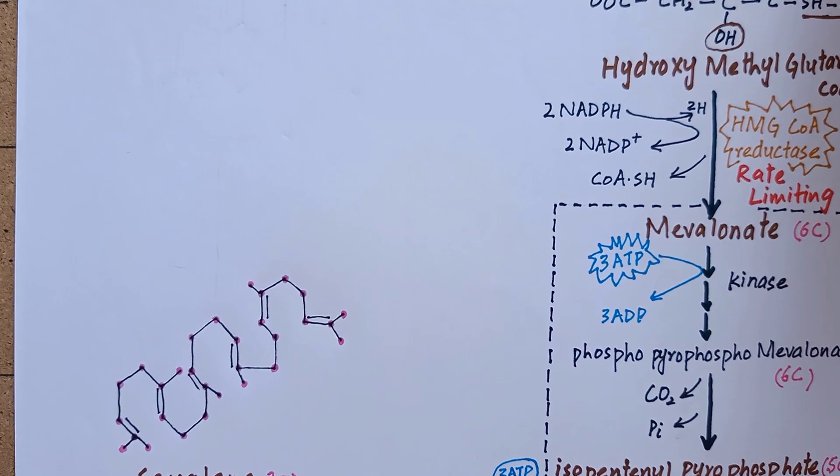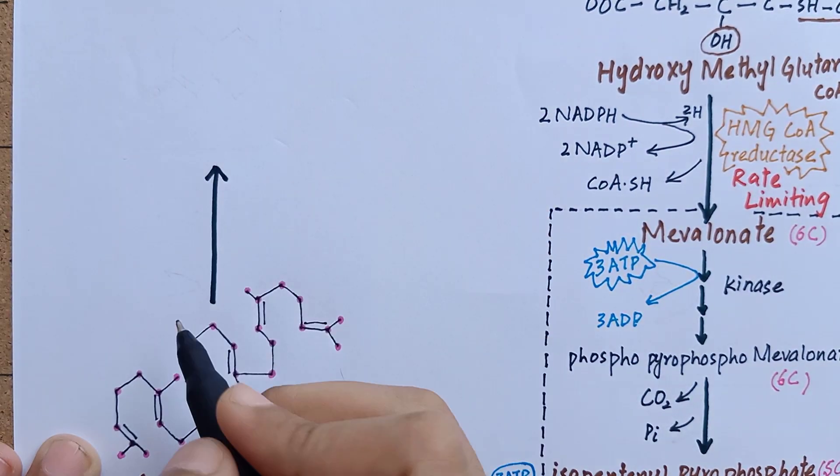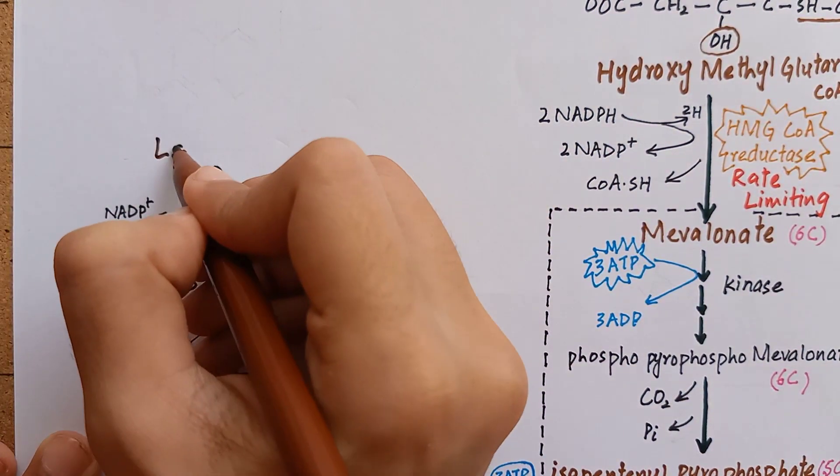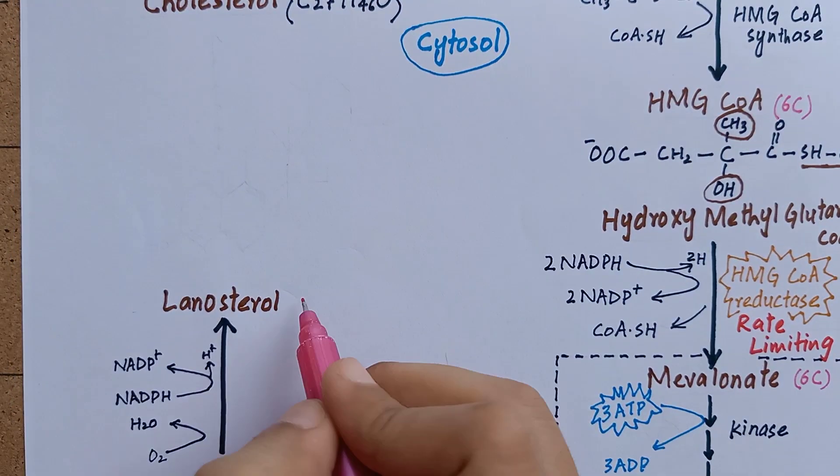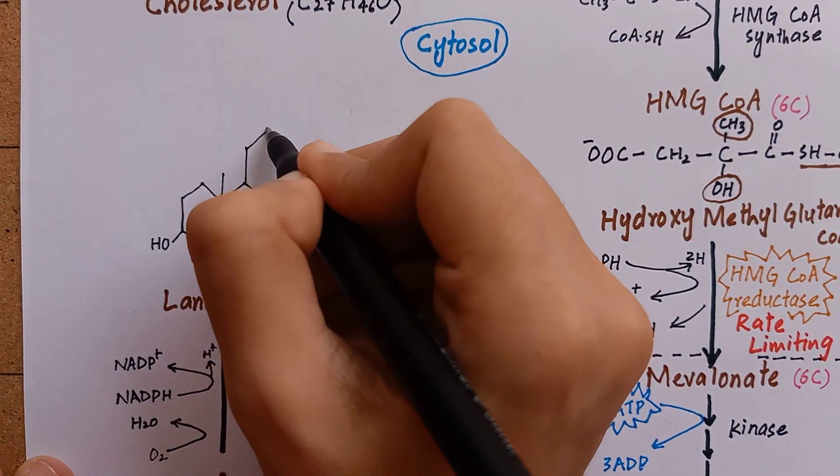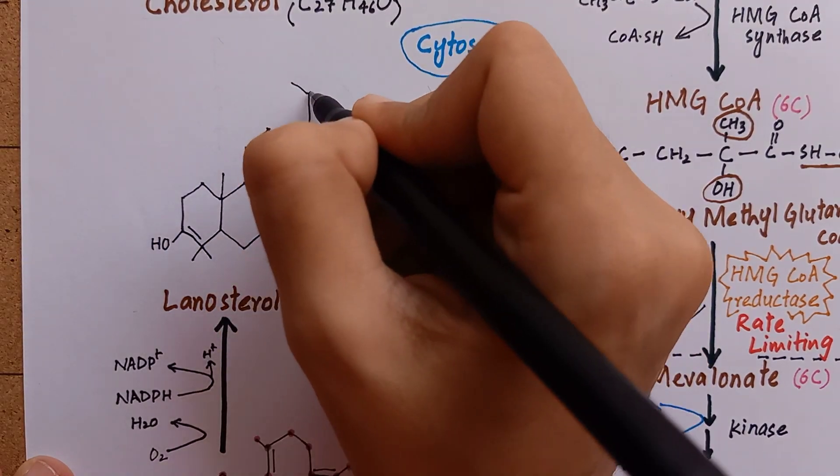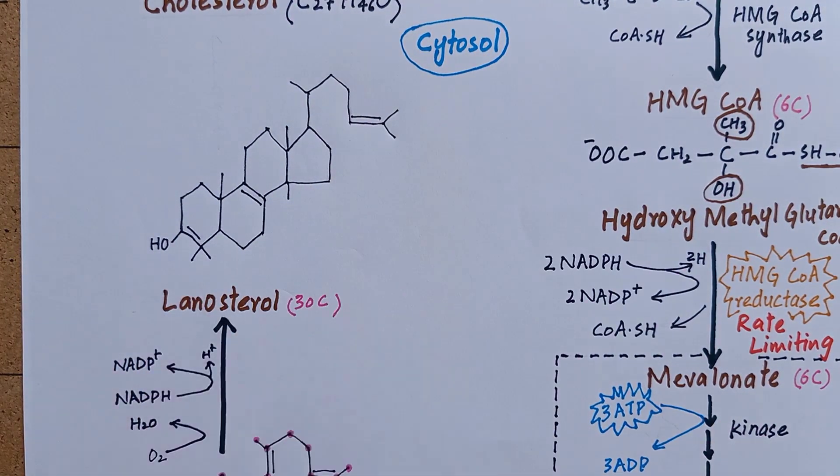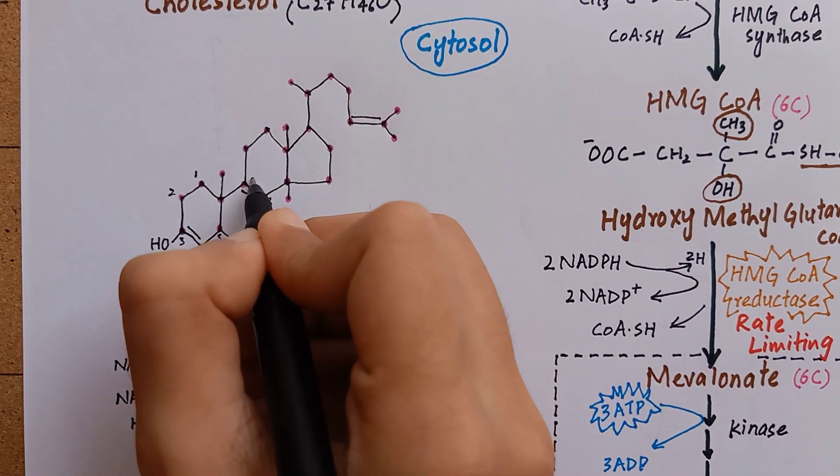Squalene undergoes hydroxylation and cyclization utilizing oxygen and NADPH and gets converted to lanosterol. This is the structure of lanosterol. The rings have been formed, but lanosterol is a 30-carbon compound and we only need 27 carbons in cholesterol.